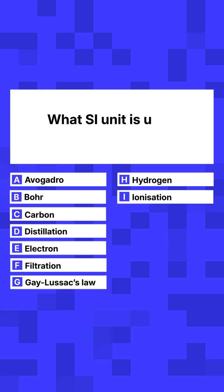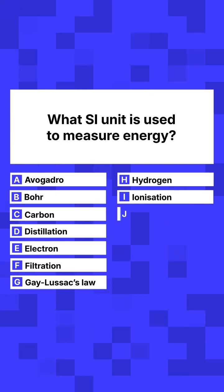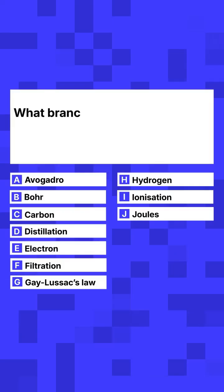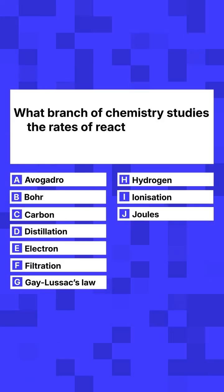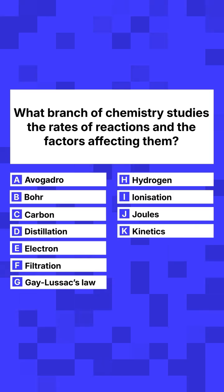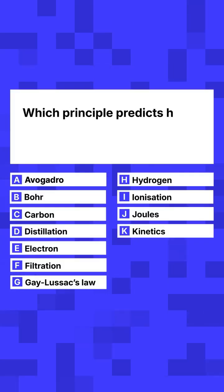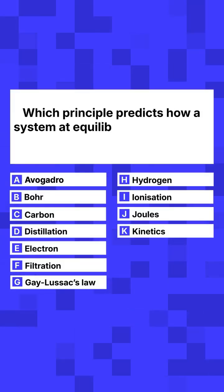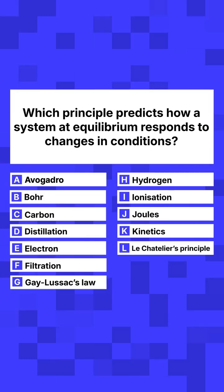J. What SI unit is used to measure energy? Joules. K. What branch of chemistry studies the rate of reaction and the factors affecting them? Kinetics. L. Which principle predicts how a system at equilibrium responds to changes in conditions? Le Chatelier's principle.